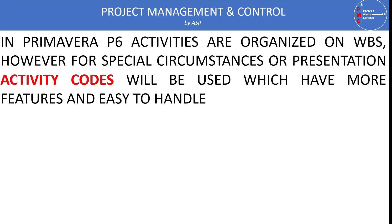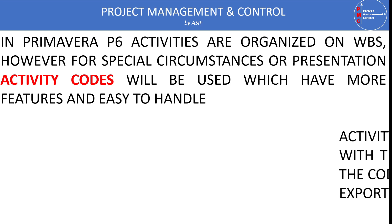Activities are organized based on Work Breakdown Structure. However, for some special circumstances or presentation requirements, activity codes are best suited. Activity codes have more features compared to filters, because with filters you have to define them again and again, and sometimes you need multiple filters to support each other. To avoid such conditions, you can use activity codes to organize data more efficiently. Activity codes are easier and more handy.